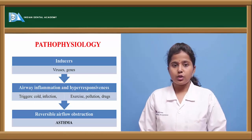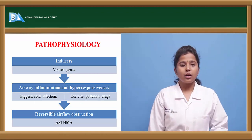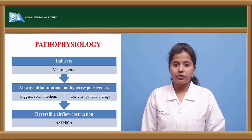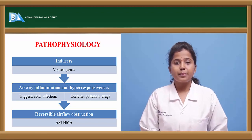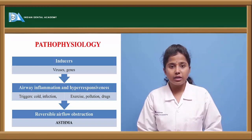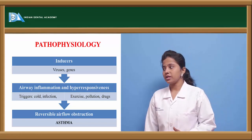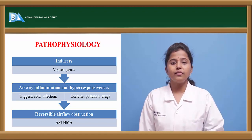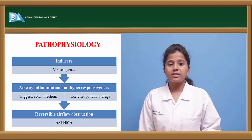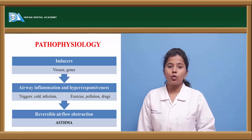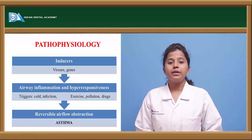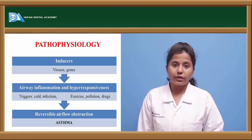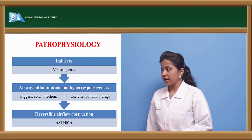Let us see the pathophysiology. There are inducers like viruses as well as genes. There are various genes, viruses, pyrogens, or allergens — these are inducers of asthma. When these pyrogens or allergens enter the body, it shows symptoms like cold infection; it triggers constriction of bronchial smooth muscle. Exercise also causes constriction of the airways, and thereby asthma is observed.